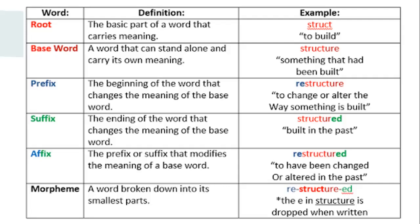A base word is a word that can stand alone and carry its own meaning — for example, "structure," something that has been built. Prefix: the beginning of the word that changes the meaning of the base word — "restructure," to change or alter the way something is built. Suffix: the ending of the word that changes the meaning — "structured," built in the past. Affix: the prefix or suffix that modifies the meaning — "restructured," to have been changed or altered in the past.